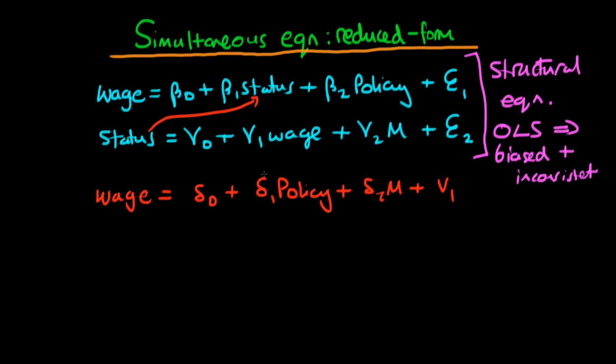So you'll find here that delta 1 is itself a function of beta 1. It's probably also a function of gamma 1 and a whole range of other factors in the other coefficients as well. And V1 itself is going to be a function of both epsilon 1 and epsilon 2. So that's the first equation.